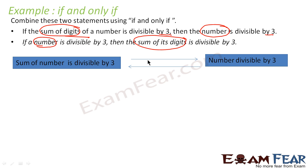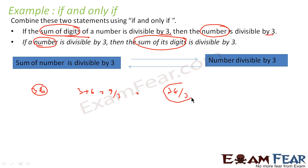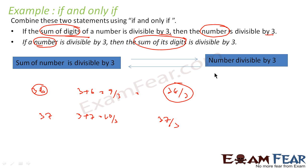Here also, if you see, it is bidirectional. For example, there is a number 36. If the sum is divisible by 3 — 3 plus 6 equals 9, which is divisible by 3 — then we can say that 36 is also divisible by 3. For example, if it is 3 plus 7 equal to 10, which is not divisible by 3, then we can say that 37 is also divisible by 3.